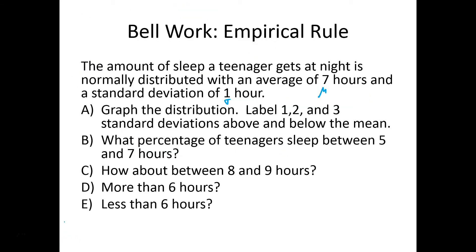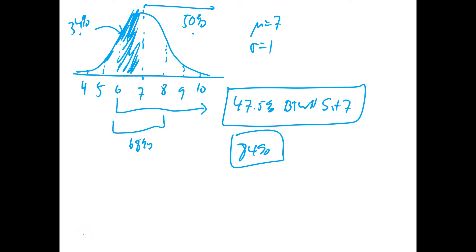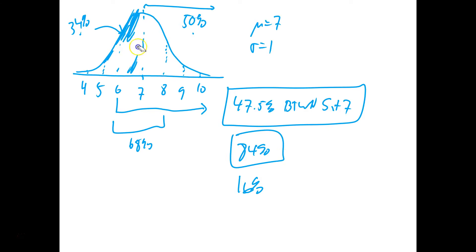Now they say how about less than 6 hours? We just found more than 6 hours was 84%, so less should be 16%. We can also verify: between 6 and 8 is 68%, so from 6 to 7 is 34%. The entire left half from 7 is 50%, and 50 minus 34 is 16. So it works out. Hopefully you've got the empirical rule down now.